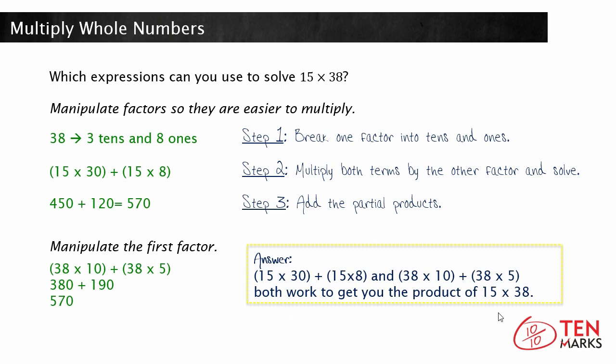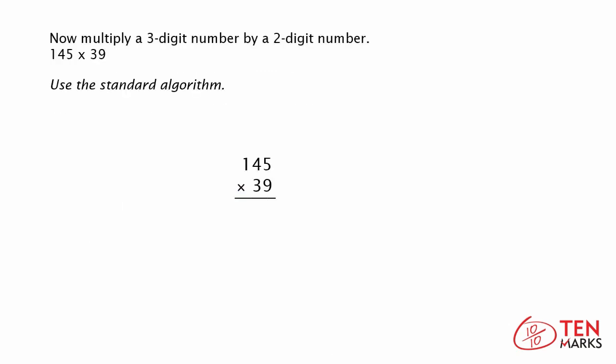Let's move on to your next problem. Now multiply a 3-digit number by a 2-digit number. In this case you're going to multiply 145 times 39, and you're going to use the standard algorithm to solve this problem.